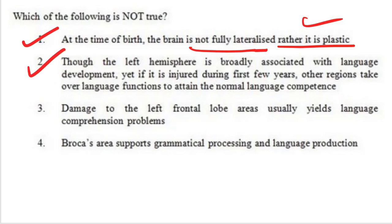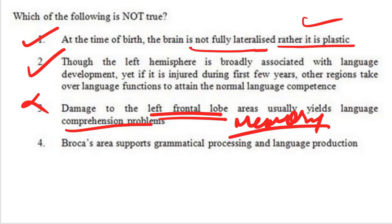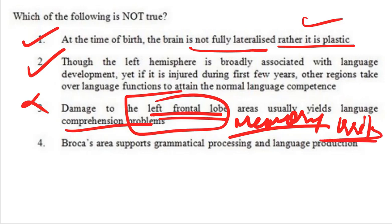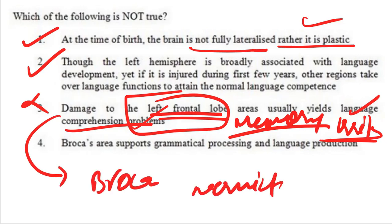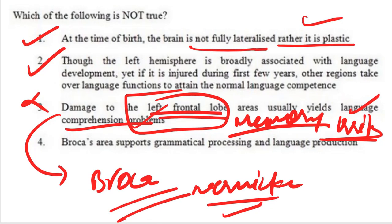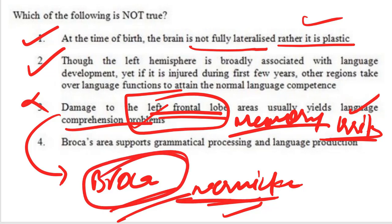The third statement says damage to the left frontal lobe areas usually yields language comprehension problems. This statement is wrong because the left frontal lobe is important for memory, so damage there causes memory impairment and irritability. Statement four says the left frontal lobe area supports grammatical processing and language. So the answer is option 3, which is the incorrect statement.